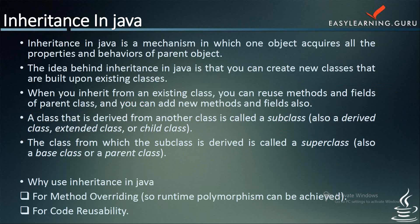Inheritance in Java is a mechanism in which one object acquires all the properties and behaviors of the parent object. Inheritance provides a mechanism that allows a class to inherit properties of another class. When a class extends another class, it inherits all the non-private members, including fields and methods. Inheritance in Java can be best understood in terms of a parent-child relationship — the parent class is also known as a super class, and the child class is also known as a subclass.